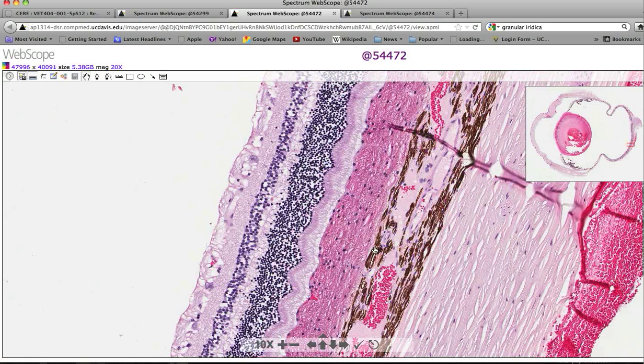Notice that exterior to that, you have a variably thick layer of regular pigmented choroid, same structures as in the anterior uvea: melanocytes, non-pigmented stromal cells, lots of blood vessels.